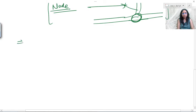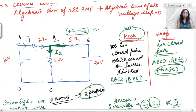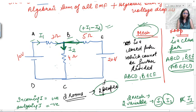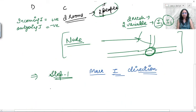Now let me write down the steps of KVL. Step one: mark the current direction in each and every branch. We have already marked that i1 flows from a to b, i2 flows from b to c, and i1 minus i2 flows from b to e.